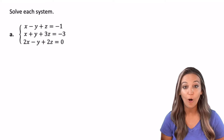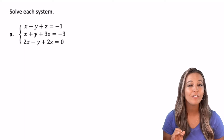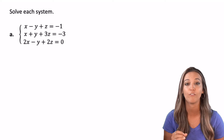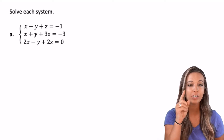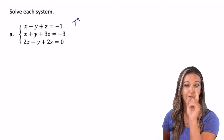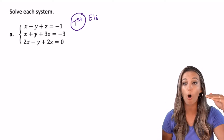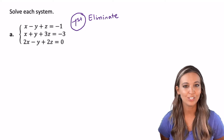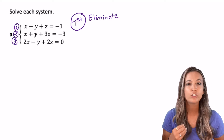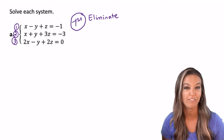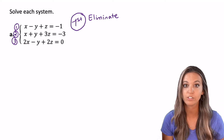Now it's time to solve a three-variable system using elimination. The key is showing your work and being careful with each step. We'll organize our steps as first, second, and third. Write "first step" in a circle. The first step is to eliminate one variable from all three equations. Start by numbering the equations one, two, and three. Choose the variable that looks nicest — ideally one that already has at least one negative sign so you can add straight down and cancel that variable.